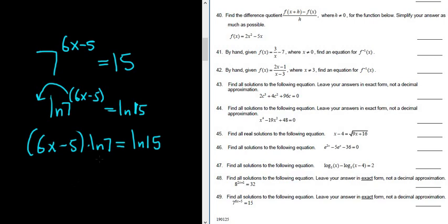We're looking for x. So it's in the parentheses, so that means we probably should distribute this natural log of 7. So this will be 6x times the natural log of 7 minus 5 times the natural log of 7, and this is equal to the natural log of 15.